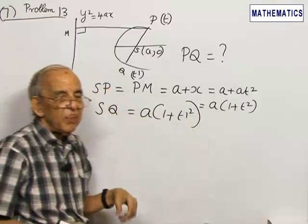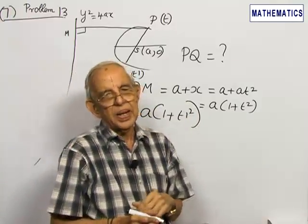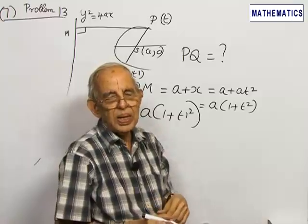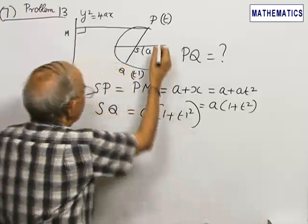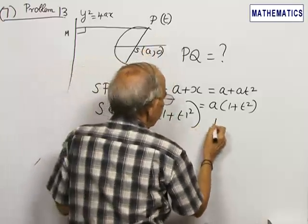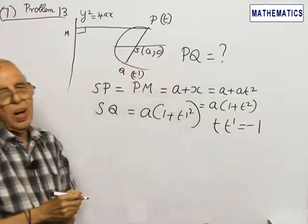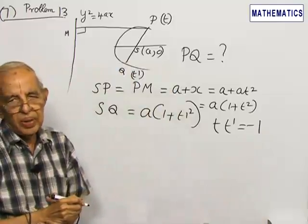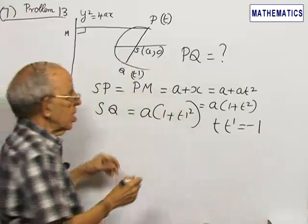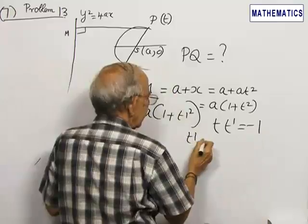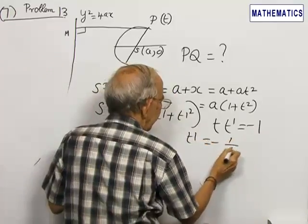PQ is a focal chord. The important property of a focal chord is t times t dash is equal to minus 1. This is true only for a focal chord. So t dash is minus 1 by t.